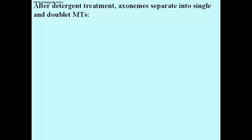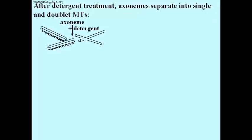You can use different detergents and different chemical treatments to remove components of the axoneme. You will actually separate the microtubules in the axoneme into single and double microtubules. Here we have an axoneme and an appropriate detergent, and we've broken it apart. What you see here is the single microtubule that would have been derived from the middle component of an axoneme, and you see the doublets.